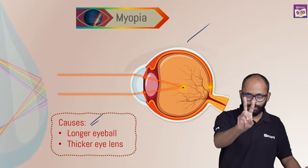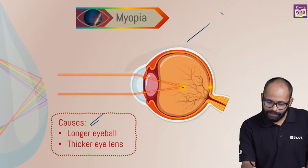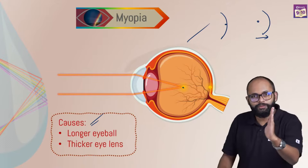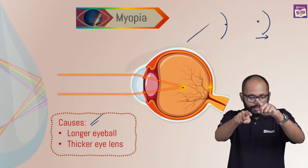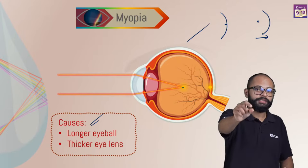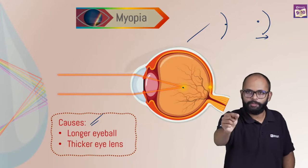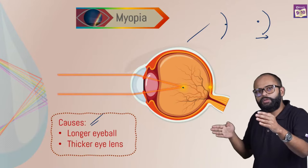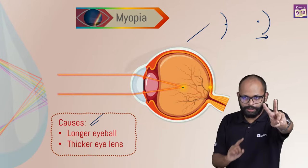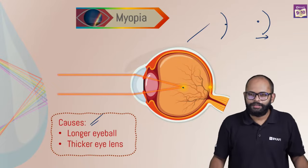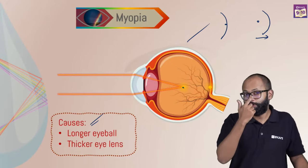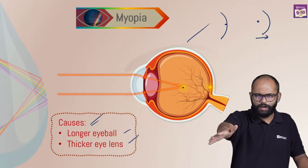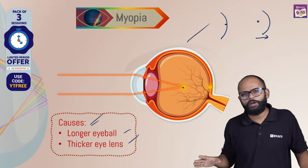There could be two causes of myopia: one is a longer eyeball — if the image was supposed to form here but now forms in front because the retina moved back — or the eye lens is thicker. Both these reasons are understandable from basics; no need to cram them. If the image is in front of the retina, either the eyeball became longer or the lens is thick.